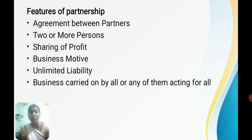Next is profit motive — the business motive should be profit, but the business must be lawful. Only lawful business is covered under the partnership firm; unlawful business is not. Then there is liability — all partners have unlimited liability at the time of any risk. Finally, business is carried on by all or any of them acting for all, meaning any one partner can act as a representative for all partners, or all partners have equal rights to take decisions. These are the major features of partnership.